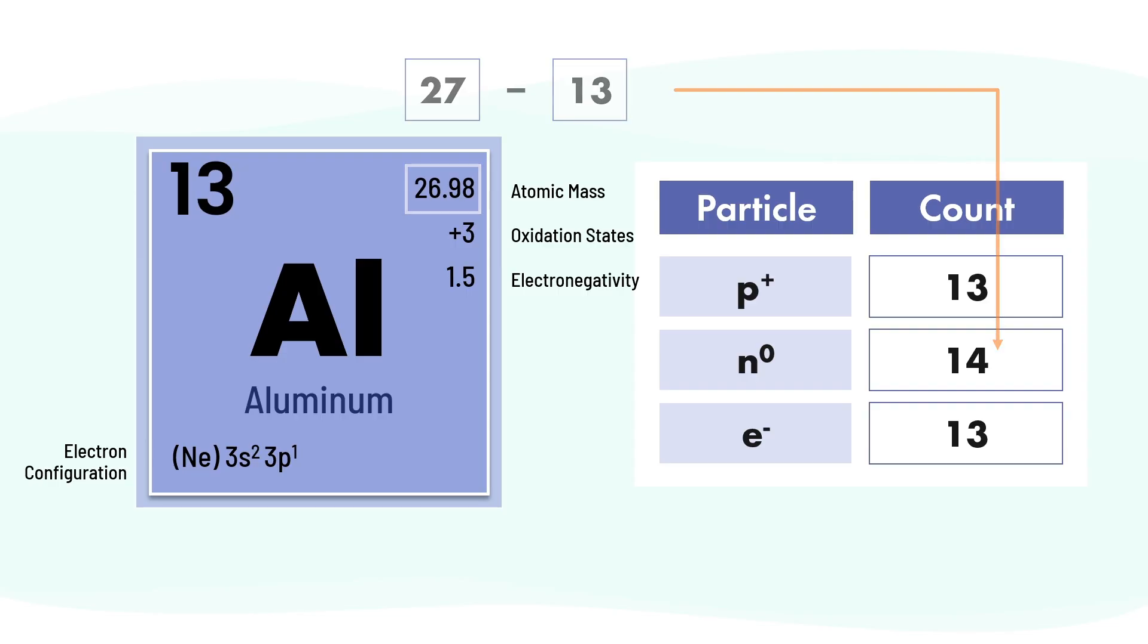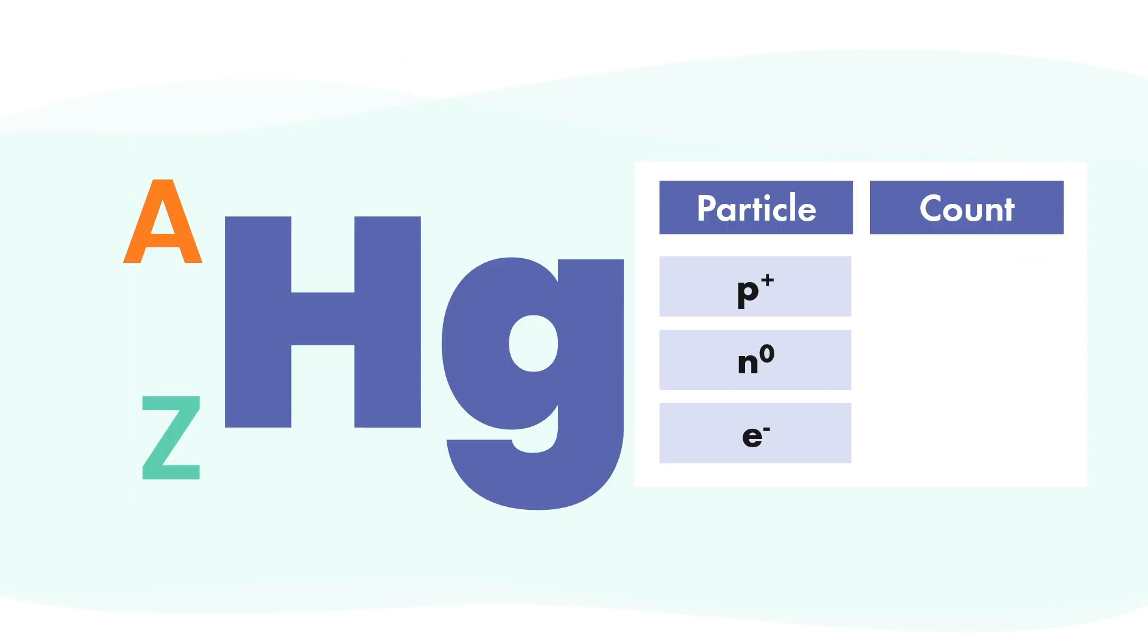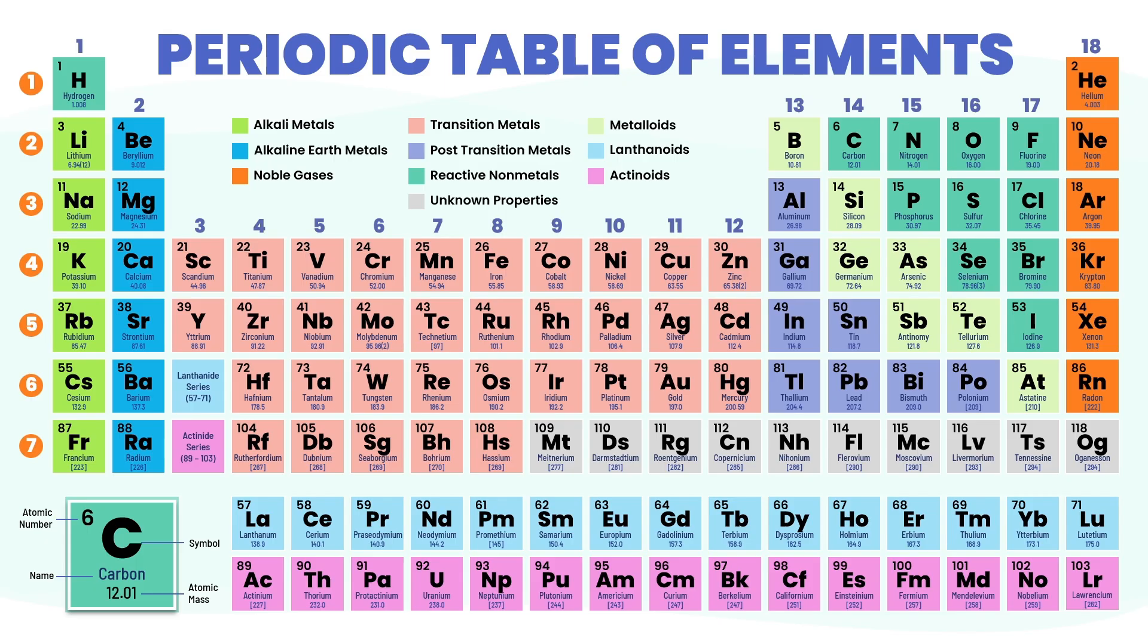Alright, your turn. Let's use everything we've learned to break down this atom. We're looking at the element mercury with the symbol Hg. You've got a blank table, its symbol, mass number, and atomic number. Grab your periodic table—you'll need it.